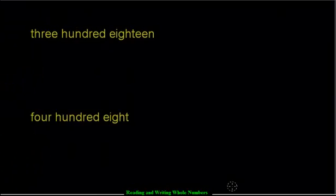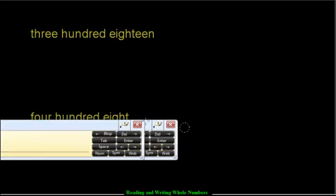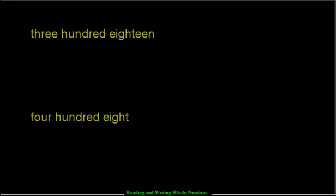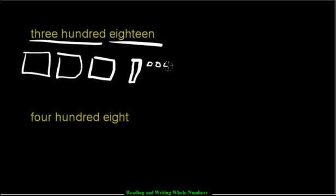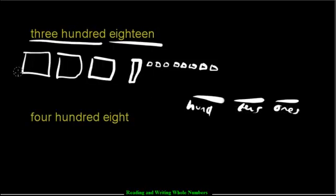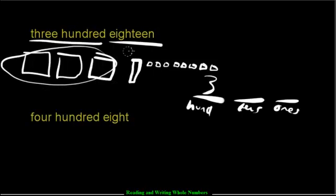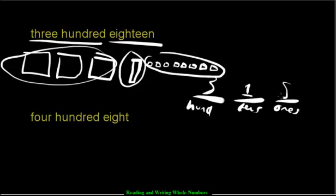Let's try the next two. For the first question, you should have drawn 300 — so three hundreds. Then 18: you need a ten first, and then eight individual ones — eleven, twelve, thirteen, fourteen, fifteen, sixteen, seventeen, eighteen. Writing it out: 3 in the hundreds spot, 1 in the tens, 8 in the ones. So that's 318.